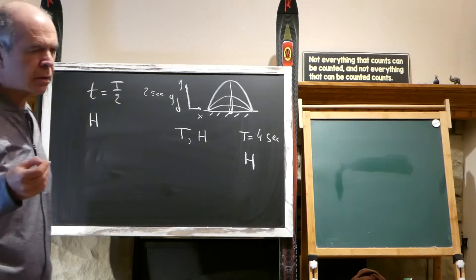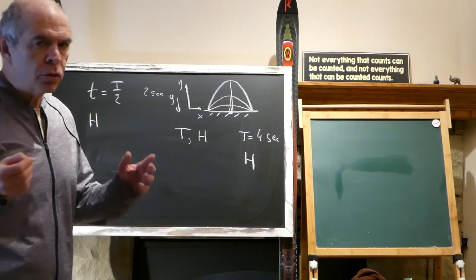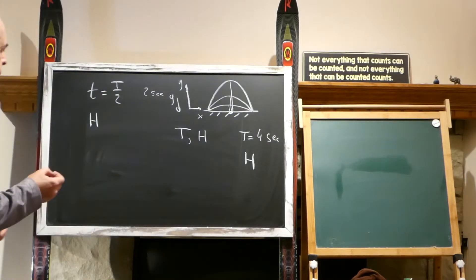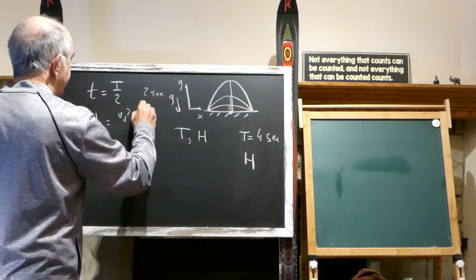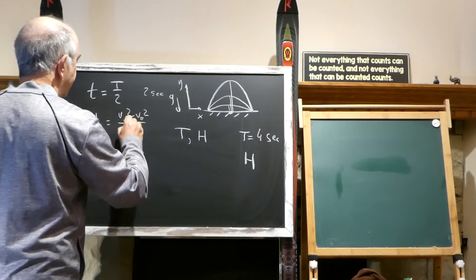And there are several formulas. First of all, we can use V final squared minus V zero squared divided by 2A.